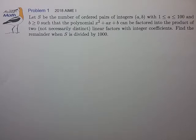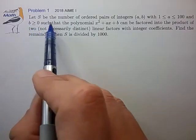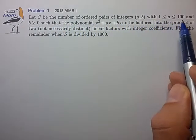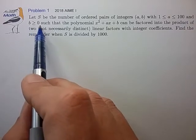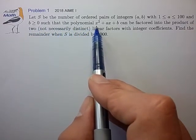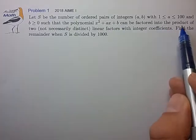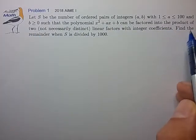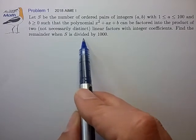Hi, this is problem one from the 2018 AIME 1. Let S be the number of ordered pairs of integers (a, b) with 1 ≤ a ≤ 100 and b ≥ 0 such that the polynomial x² + ax + b can be factored into the product of two linear factors with integer coefficients. Find the remainder when S is divided by 1000.